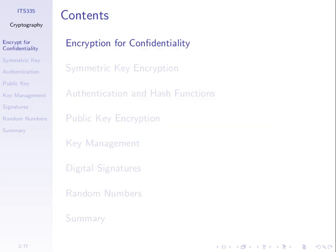Cryptography. First let's look at the most common thing we think about with computer and network security: providing confidentiality, sending a secret message to someone. User A wants to send a message to user B. They want user B to be able to read the message but they don't want anyone else to be able to read the message — we want to send a confidential message from A to B. That's a common thing we want to do in a system.